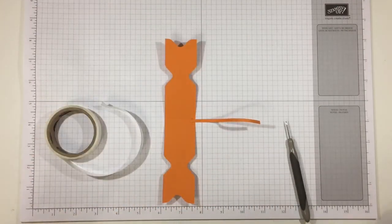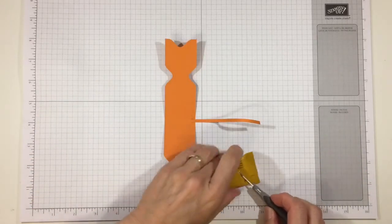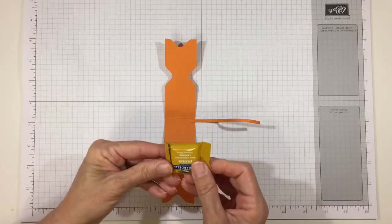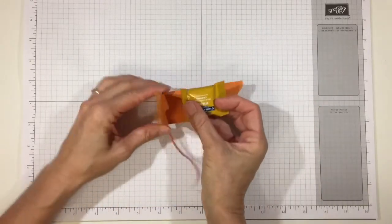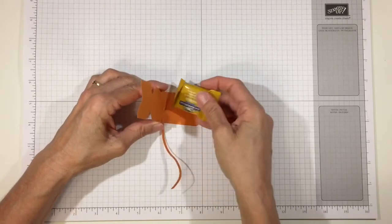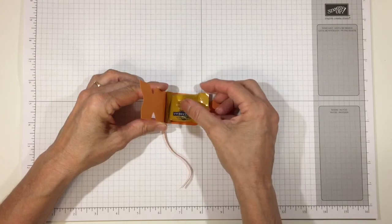Now we'll take our Ghirardelli Mini and we'll put a glue dot on the back of that as well. And I folded up the end and centered it in the base of the cat like that.